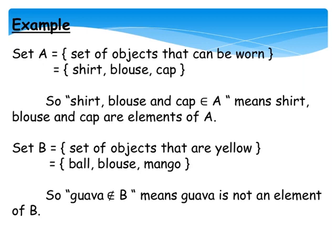So shirt, blouse, and cap belongs to A. The symbol ∈ means 'belongs to'. So shirt, blouse, and cap are elements of A.